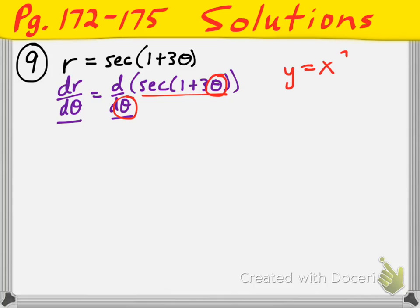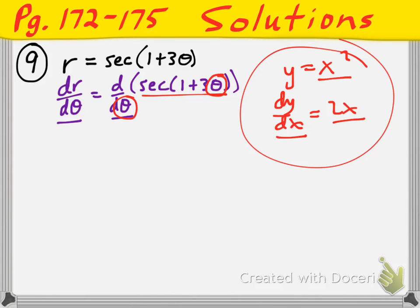Remember, if it's y equals x squared, then dy/dx is 2x — the derivative of the left side with respect to x equals the derivative of the right side with respect to x. I'm hoping that the r's and thetas aren't throwing you off, and if they are, a couple of these problems might help you see that it's just the same thing as what you were doing before with x's and y's.